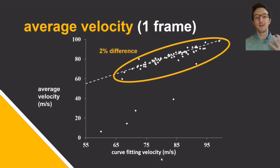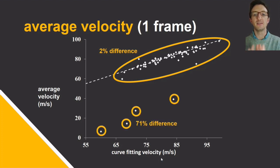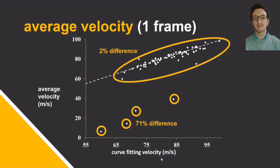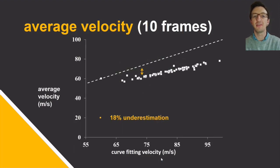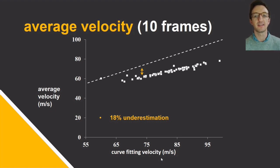Because of shuttle deceleration after impact, taking an average velocity between the first two recorded positions post-impact is one alternative method. We compared our curve-fitting methodology with this method as an average over one frame at 400 Hz. Although the difference was reasonably small for most trials, the average velocity over one frame was very susceptible to noise. A second comparison method was an average over 10 frames, which resulted in a systematic 18% underestimation of shuttle velocity compared to the curve-fitting method. This explains why previous methods have underestimated smash speeds due to either later recording or decreased capture frequencies.